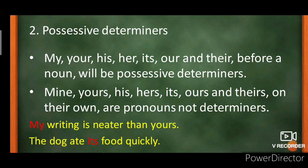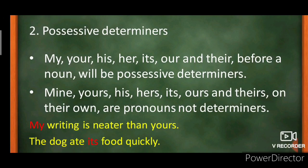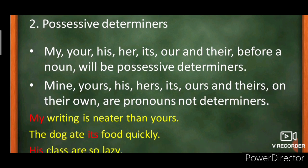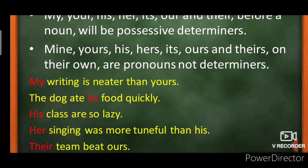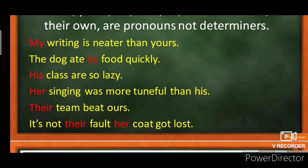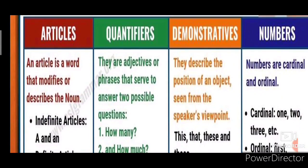As we have seen in the previous lecture, 'This book is mine' — here mine is your possessive pronoun. But in the example 'My writing is neater than yours,' we have written my instead of mine. So here my is your possessive determiner, placed just before the noun. Another example: 'The dog ate its food' — food is your noun and its is placed just before the noun, making it a possessive determiner.